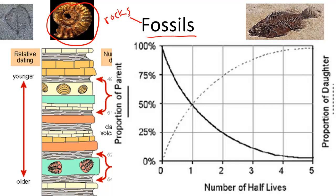Over 17,000 species of trilobites helped scientists learn more about the law of superposition and the sequence of events in Earth's history. In this lesson, we are going to define fossils, discuss how fossils are dated, and state why they are so important.